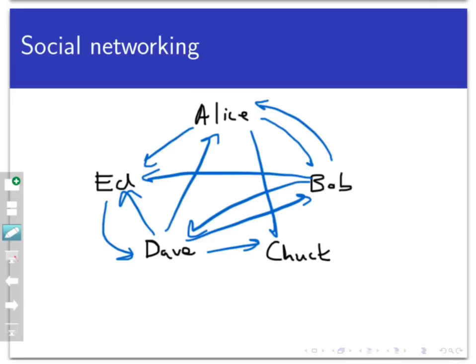The social network, in this sense, would be a set of ordered pairs. We'll put the pair (x, y) in the set if x follows y. So, for example, this small social network could be represented as the following set of ordered pairs.